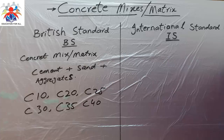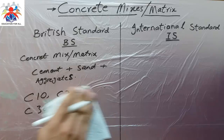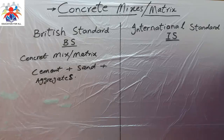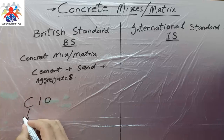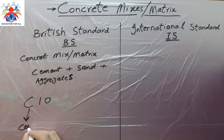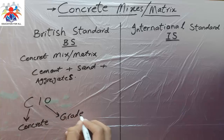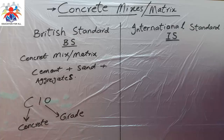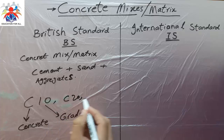Let me explain what C10 means. C means concrete and the number — 10 — means grade. So C10 means grade 10 concrete, or grade 10 mix. Similarly you can have C20, C25, and so on.